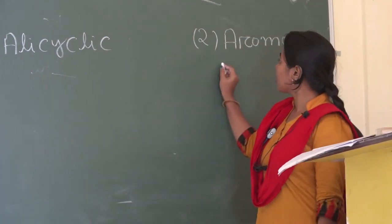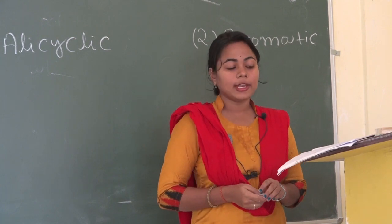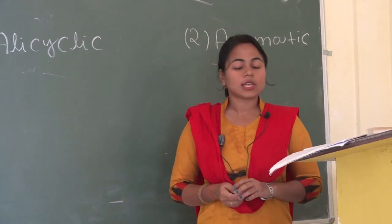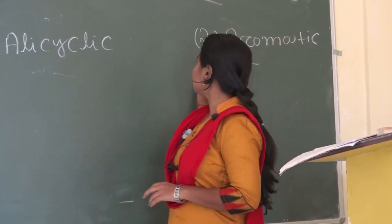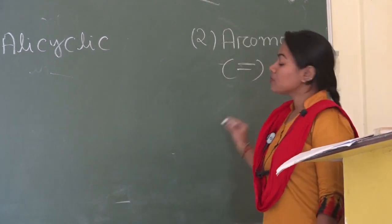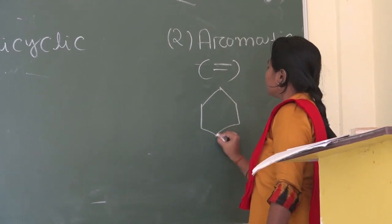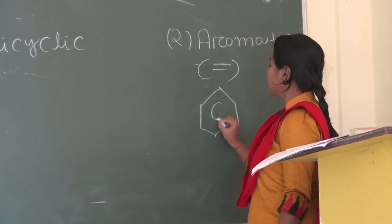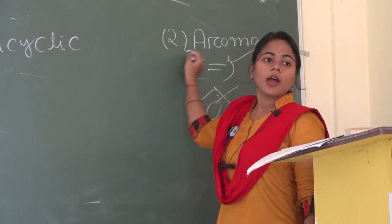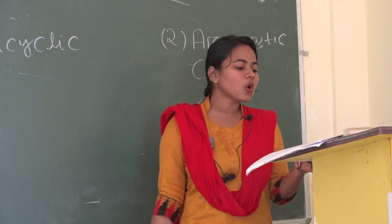In aromatic hydrocarbons, delocalized pi electrons are present in this carbon, and it has alternating double bonds. The common example is benzene. Benzene is the common example of aromatic hydrocarbon.